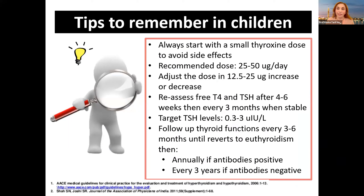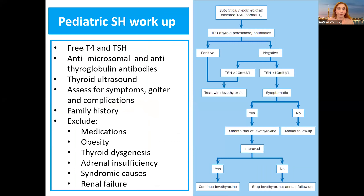Adjust the dose in increments of 12.5 micrograms — increase or decrease as needed. Reassess thyroid function every four to six weeks, then every three months. Our target TSH in children is from 0.3 to 3. Follow up every three to six months when stable, then annually.